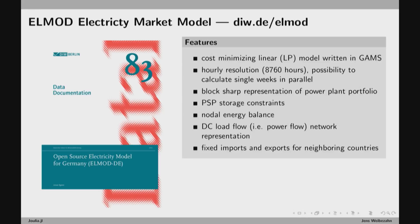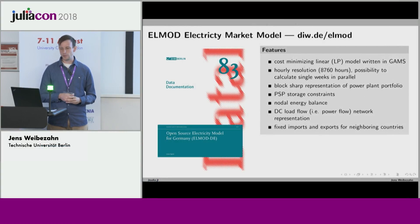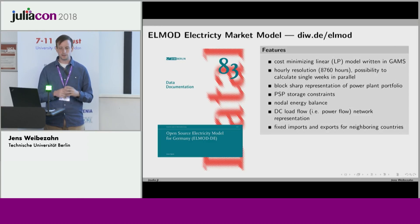We already have an open source model — you can download the code. This is an electricity market model for Germany called Elmod. It's just a linear program, not very complex under the hood. It's written in GAMS, so you need the GAMS software and a license, because even a small number of variables is enough to require one. The model can calculate one year — 8,760 hours — of power plant dispatch. It has a block representation of the conventional power plant portfolio for Germany, pump storage power plants, a nodal energy balance, the full German transmission grid, and uses the DC load flow approach — a linear power flow approximation to calculate nodal energy balances.